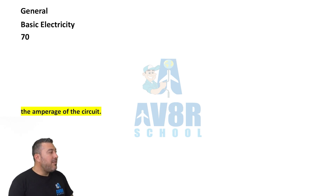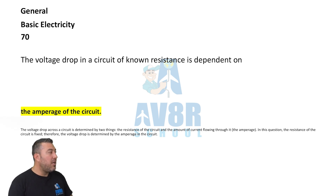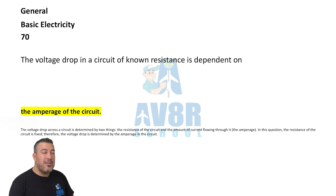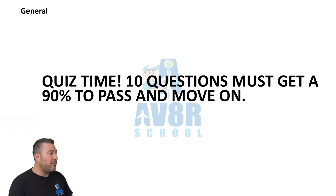70: The voltage drop in a circuit of known resistance is dependent on the amperage of the circuit. All right guys, quick quiz — I'll see you in a minute.